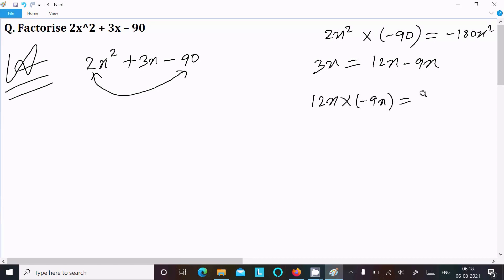And here, 12x into -9x, if you multiply, it comes to -108x².